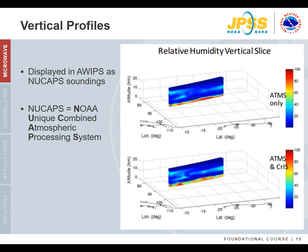Microwave information can also be displayed in vertical profiles. Here is an example of humidity profiles derived from the Advanced Technology Microwave Sounder. This information can also be merged with the Cross-track Infrared Sounder, another instrument on polar-orbiting satellites, to obtain a more detailed humidity profile representation. The vertical profile information is an output of the NOAA Unique Combined Atmospheric Processing System, or NUCAPS, which is already in AWIPS and will be discussed in an application module.